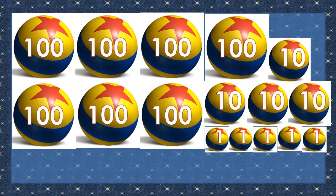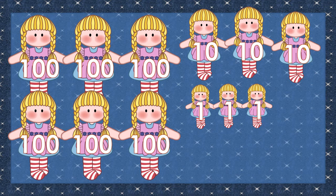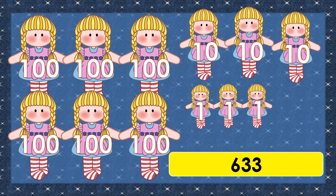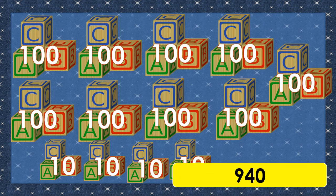How about these balls? We have 7 hundreds, 4 tens, and 5 ones. We will get 745. How about these dolls? We have 6 hundreds, 3 tens, and 3 ones. We will get 633. How about these blocks? We have 9 hundreds and 4 tens. We will get 940.